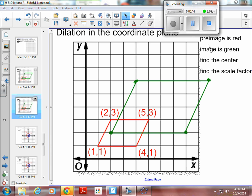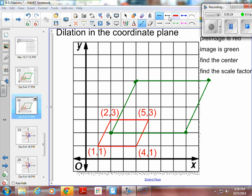So in this case, we want to find the pre-image is red, our image is green. We want to find the center. The easiest way to find your center is you take a ruler and you start drawing segments. So I'm going to match up my corners.